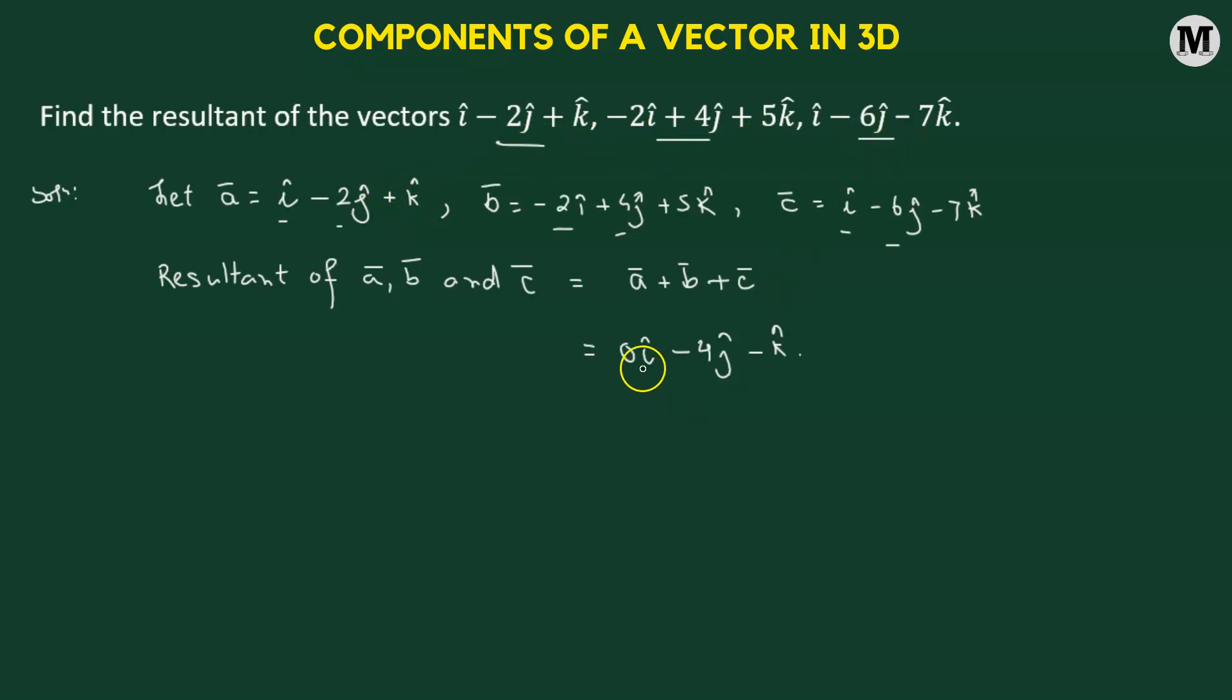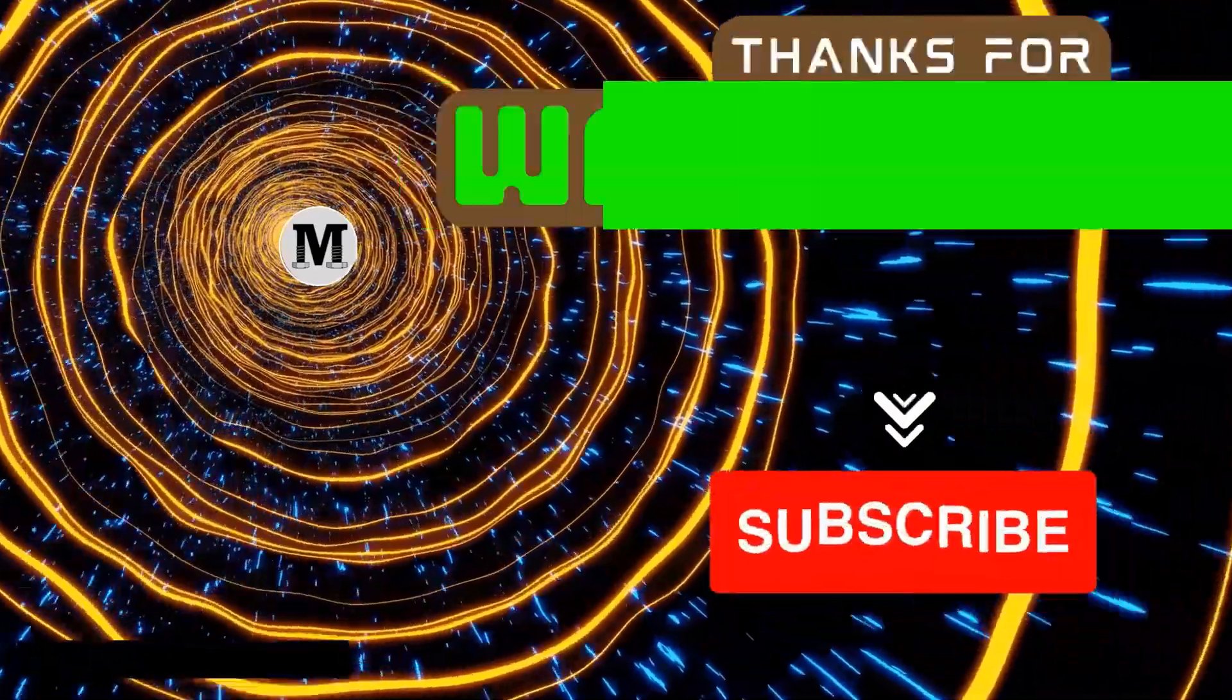Now that means the resultant of these three vectors A, B and C will be zero I cap minus 4J cap minus K cap.